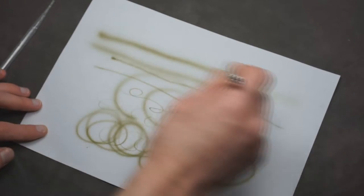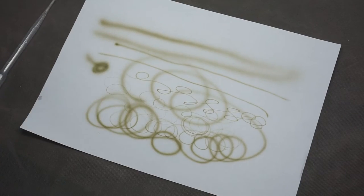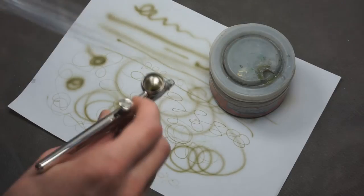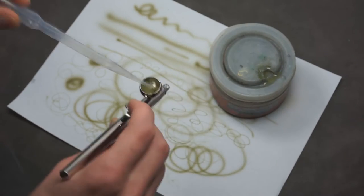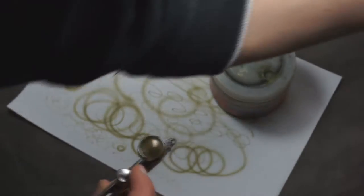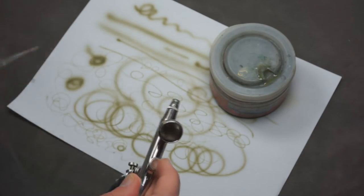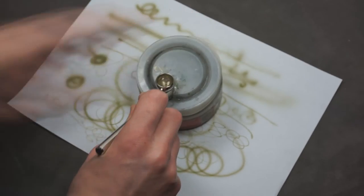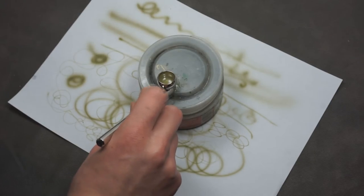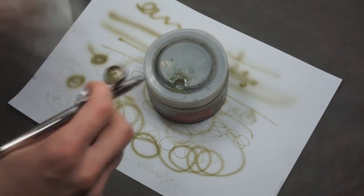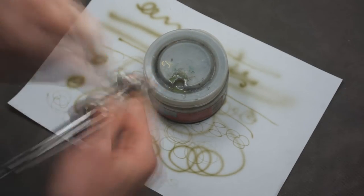I did same spraying run with Harder and Steenbeck Ultra. This airbrush does not have closed protection cap, so back flowing is not available here. Because of that, there was still lots of paint coming out during cleaning procedure.